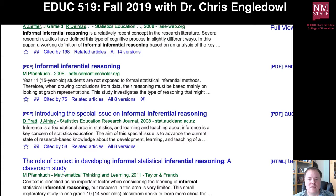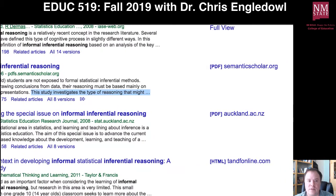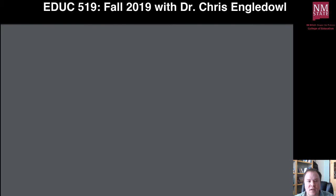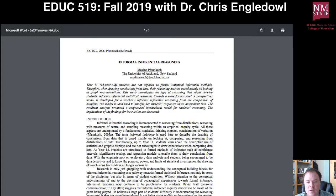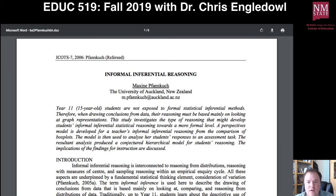Looking at the next result, the description reads: 'Year 11 students are not exposed to formal methods. Therefore when drawing conclusions the reasoning must be based mainly on looking at graph representations. This study investigates...' — that sounds promising. The PDF is available, so let's go to it. It says: 'This study investigates the type of reasoning that might develop students' informal inferential statistical reasoning towards a more formal level. A perspectives model is developed for a teacher's informal inferential reasoning from the comparison of box plots. The model is then used to analyze her students' responses to an assessment task.'